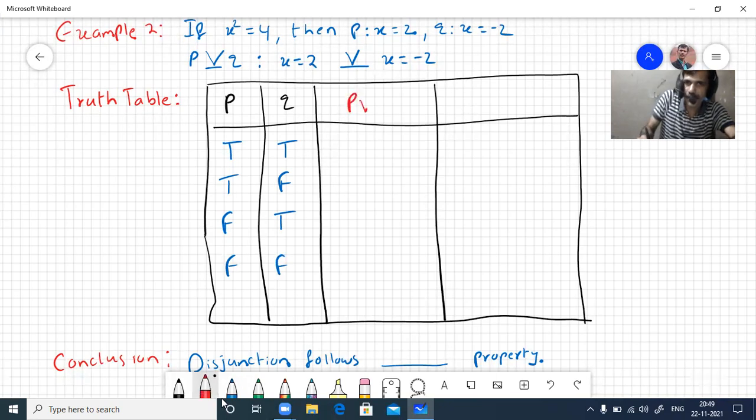For p or q and q or p, then we'll check what property it can satisfy. Based on the condition, what can you say? The disjunction is true. It is false only when both statements are false. In this last case only it can be false. Remaining all cases, it is true. Now let us see the truth values of q or p.